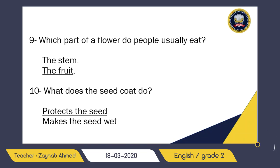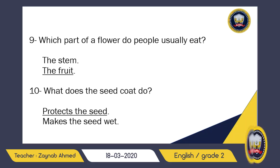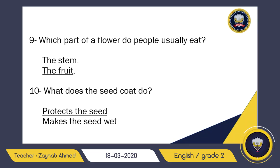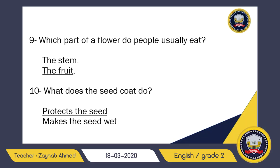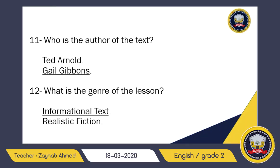Number ten: what does the seed coat do? Remember the diagram of the seed — there was food in the middle, and the outer layer was called the seed coat. The seed coat protects the seed. The other option was that it makes the seed wet, but the correct answer is it protects the seed.